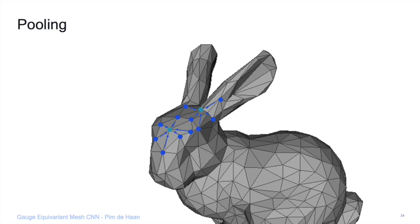For pooling in deeper networks, we find a coarse set of vertices that are as far apart as possible with a given ratio to the fine grid. To pool from fine to coarse, we parallel transport features from fine to coarse and average. To unpool, we take the feature at the coarse level, parallel transport it to all fine-level nodes, and that is our unpooling.